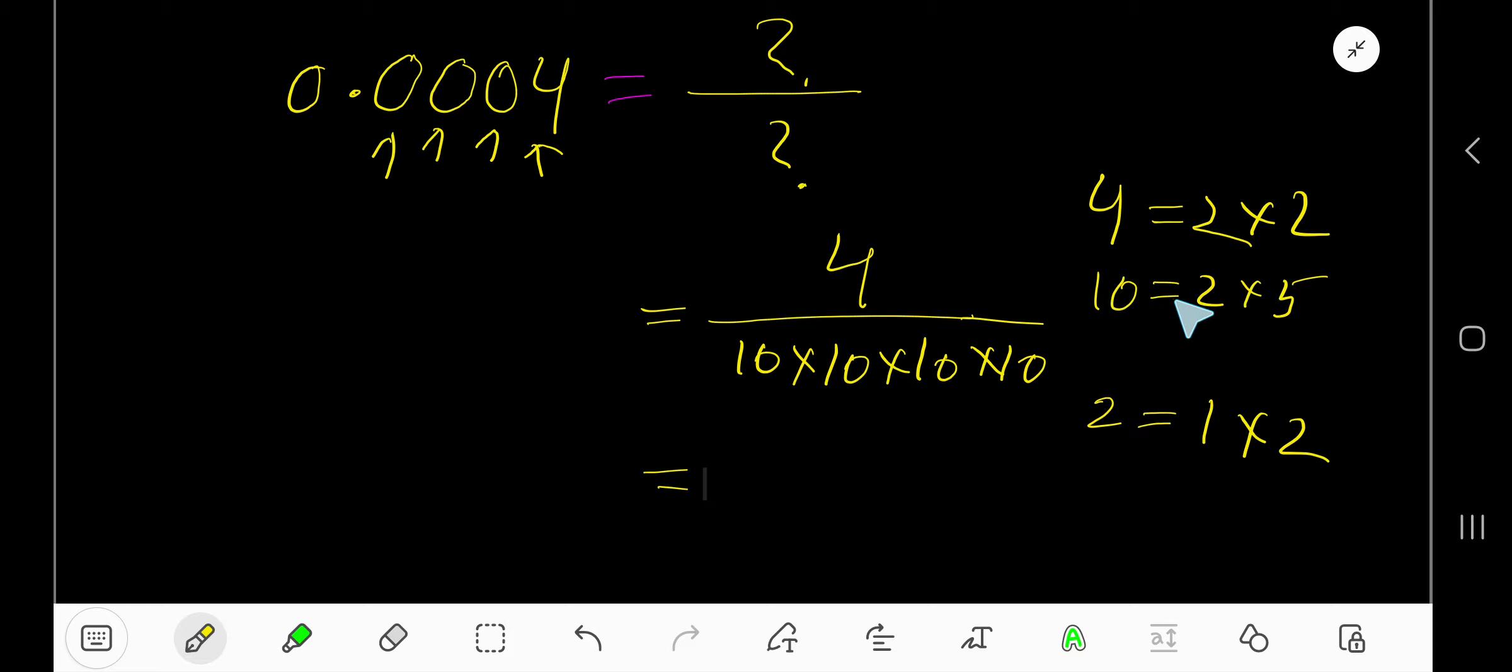Divide this 4 by 2 and you get 2. Divide this 10 by 2 and you get 5. So you're getting 2 over 5 times 10 times 10 times 10.